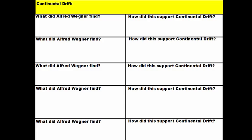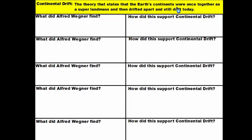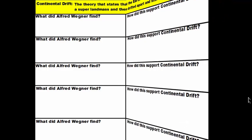If you open up your note handout, you'll find this in the middle, and at the top we'll fill in the definition of continental drift. Wegener's theory of continental drift stated that the Earth's continents were once together as a superland mass or supercontinent and then drifted apart and still drift today. So he believed that they continue to move across the Earth's surface.